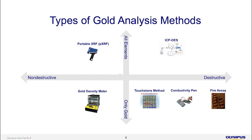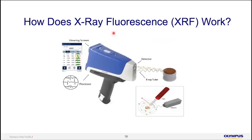Last but not least, we have portable XRF technology. With XRF, number one, it is non-destructive — no sample preparation is required, you do not need to polish your sample. You can test immediately and it will provide you with the full elemental composition of the material. XRF works by having the X-ray tube send out an X-ray, which kicks out the innermost electron of an atom. The nearest electron then replaces the one kicked out, and when this happens, a unique fluorescent signal is created. Our detector captures this unique fluorescent energy, processes it, and we get the elemental composition of the sample.